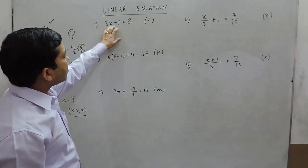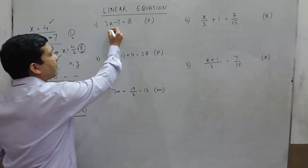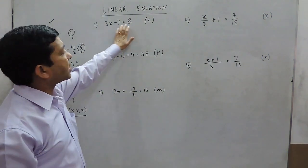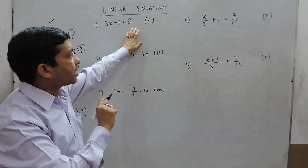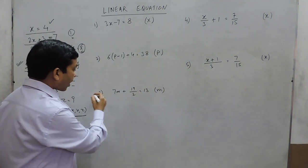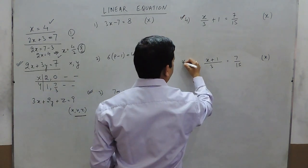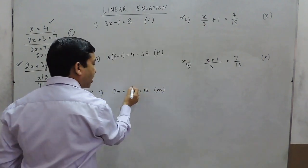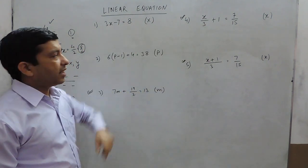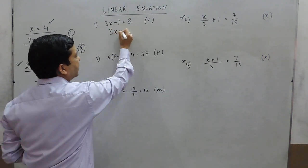When solving equations in a single variable, keep in mind that some equations have no fractions, while question numbers 3, 4, and 5 use fractions. When there is no fraction, it is straightforward — for example, this can be written as 3x equals 8 plus 7.